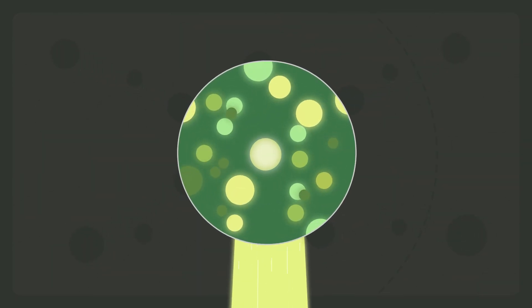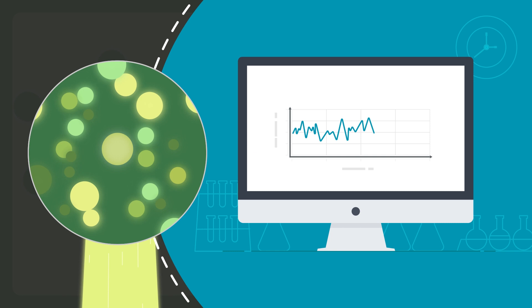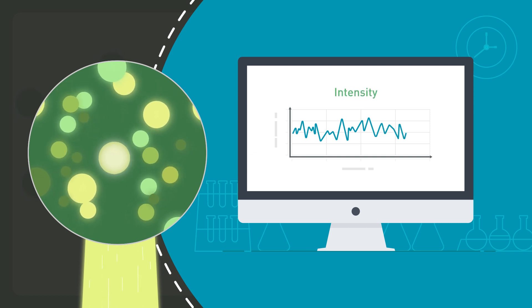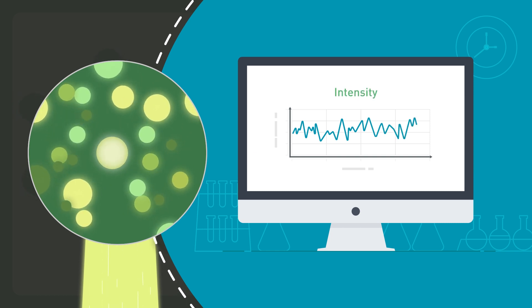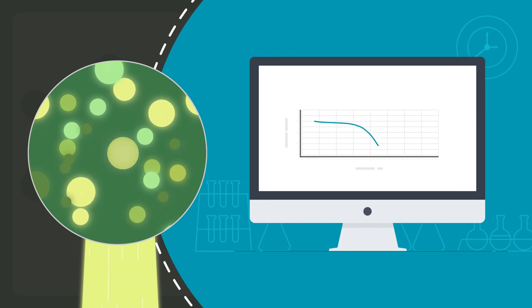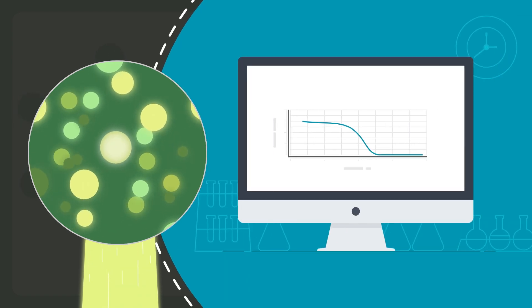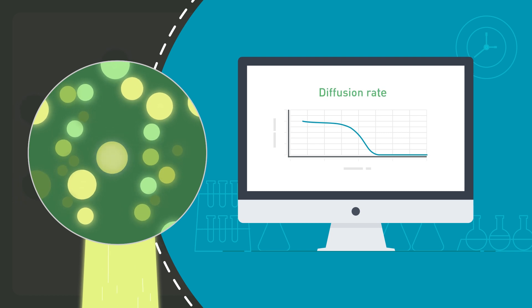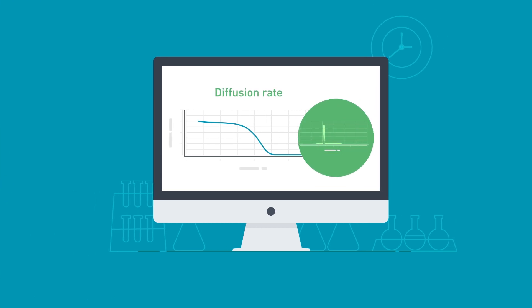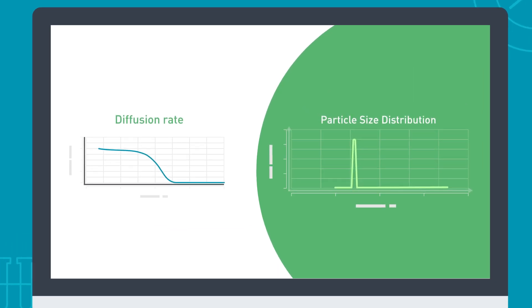Let's take a closer look. In a DLS measurement, particles are illuminated by a laser beam scattering the light. As the particles diffuse, the intensity of this detected light fluctuates over time. These fluctuations are analyzed to produce a correlation function, which is used to determine the particle diffusion rate, from which the particle size can be obtained.